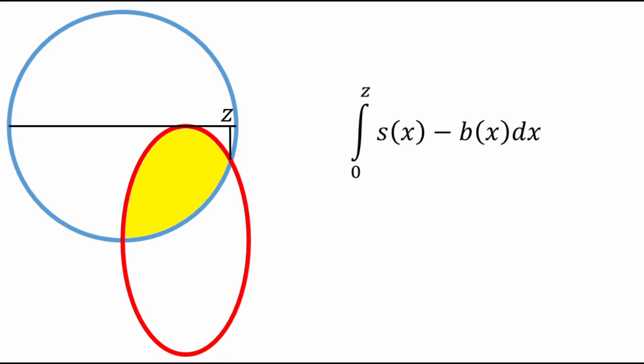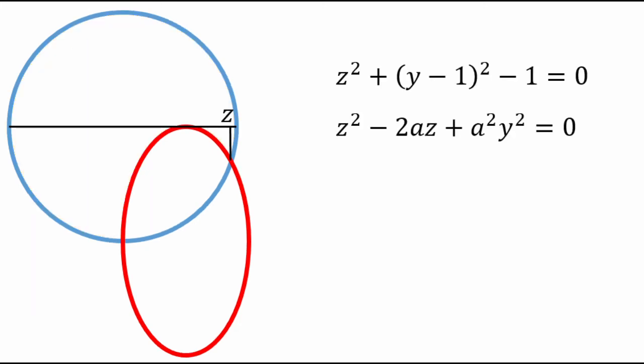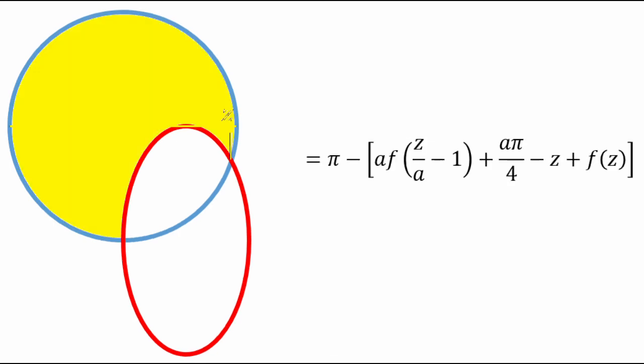I won't bore you with the details because it's essentially the same procedure as in the erect regime. And you end up with a total exposed blue ball area that looks like this. Pi minus this big thing. a times f of z over a minus 1 plus a times pi over 4 minus z plus f of z. And now z and the corresponding y are simultaneous solutions to these two equations. If we're being honest, this is kind of an unsatisfying solution. We're expressing the exposed area of the blue ball with inverse trig functions and quartic solutions. It's just ugly.